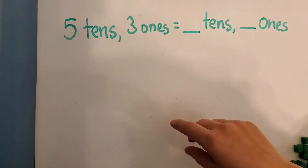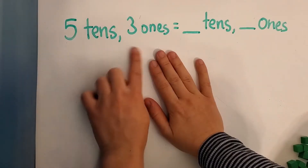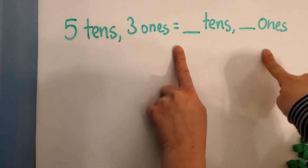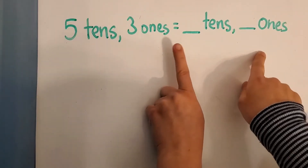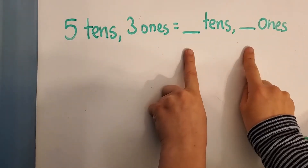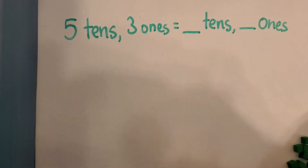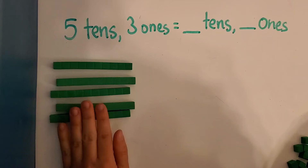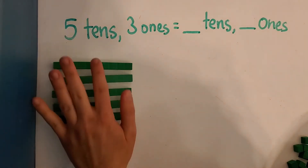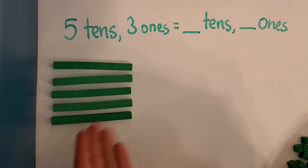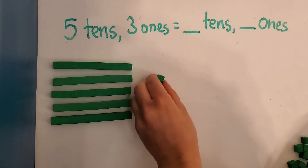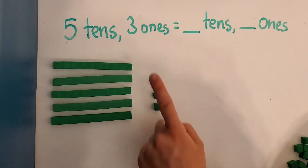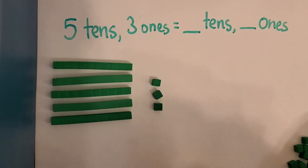So let me explain that. Right up here we have five tens and three ones equals blank tens and blank ones. So we're going to do some regrouping so we have different numbers here than we have here. But let's start off with the numbers that we do have. So we have five tens — one, two, three, four, five tens. And three ones — one, two, three. So five tens and three ones.